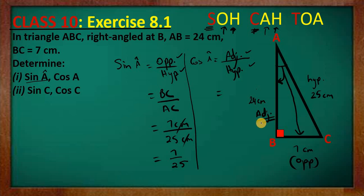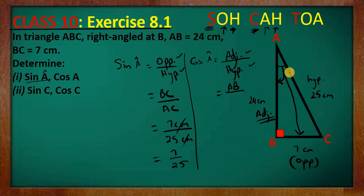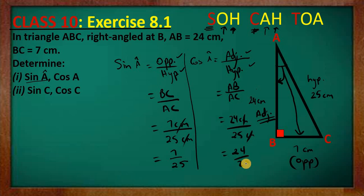Adjacent means next to. Another way to identify the adjacent side is that it has both the required acute angle and the right angle on it — so side AB has both angle A and the right angle. Therefore the adjacent is AB. Inputting measurements: AB is 24 cm and the hypotenuse AC is 25 cm, so the cosine of A is 24 over 25.